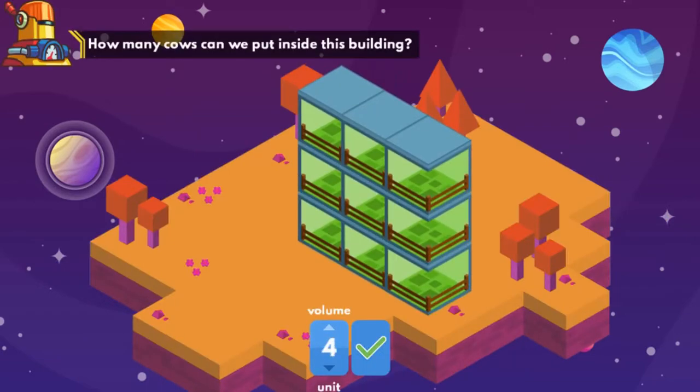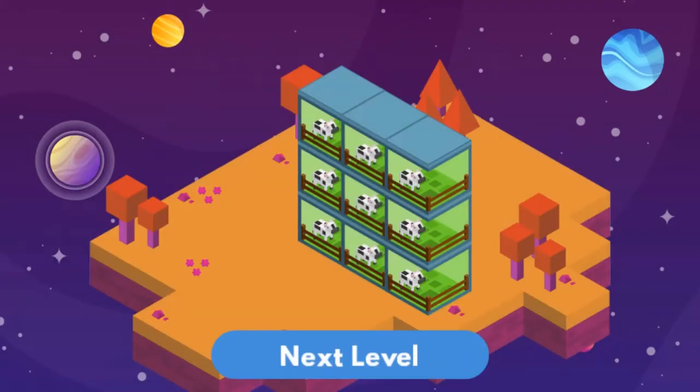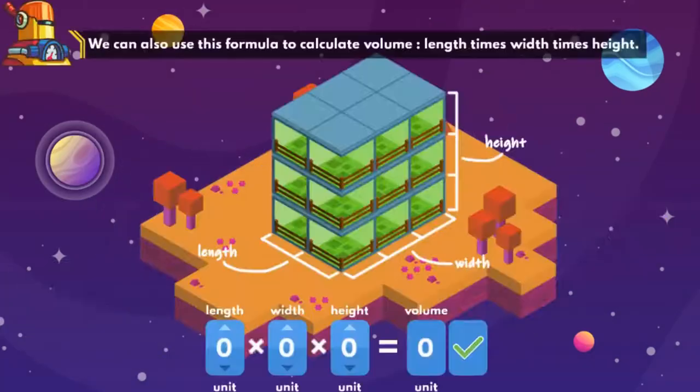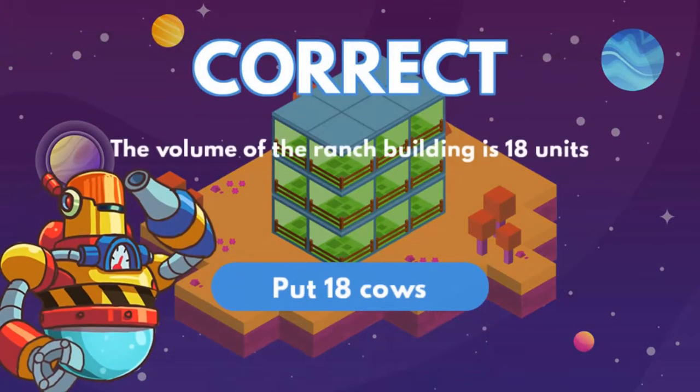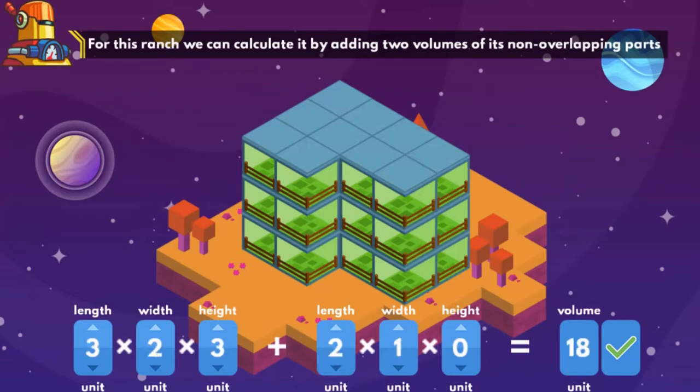But we must calculate the capacity of the building before we bring in the animals. You will help the robots determine how many cows a building can occupy using your knowledge of volume. Your goal is to calculate the volume of each building using the volume formula.